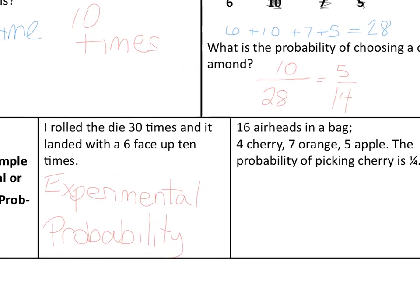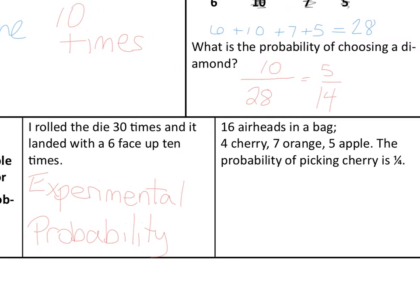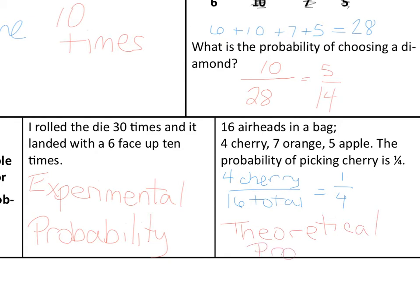The second one says there are sixteen airheads in the bag — four are cherry, seven are orange, five are apple — and the probability of picking a cherry is one-fourth. There are four cherry out of sixteen total, which is one-fourth. This is theoretical probability because we think we'll get it one-fourth of the time. However, in probability, what should happen and what does happen are two different things.